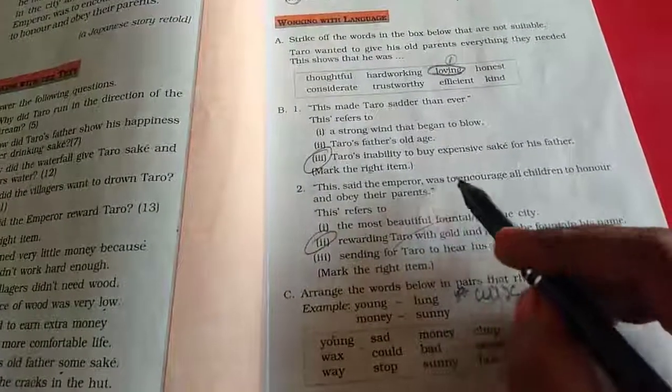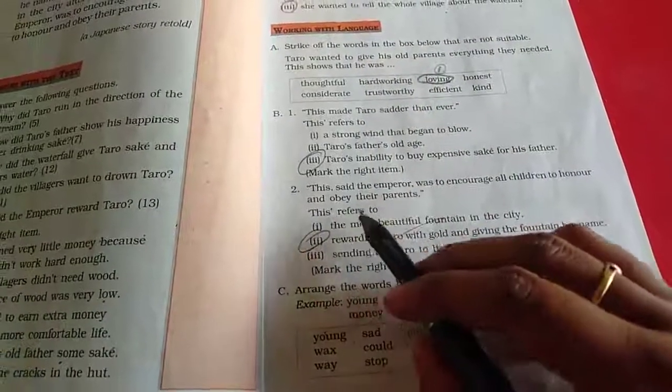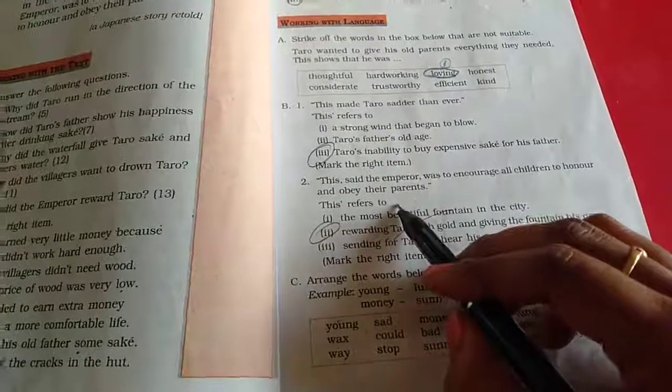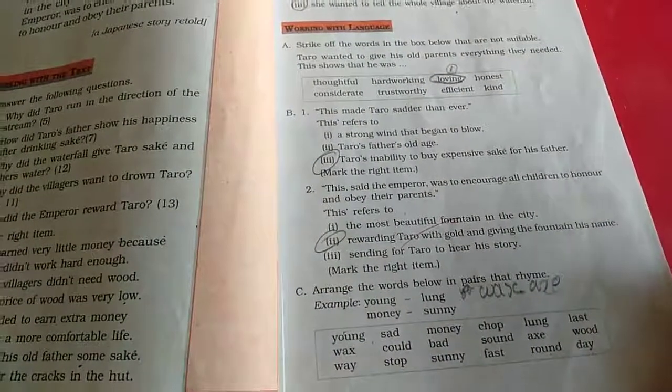This, said the emperor, wants to encourage all children to honour and obey their parents. Here, this refers to what? The reward. He got the reward from the emperor. Is it?